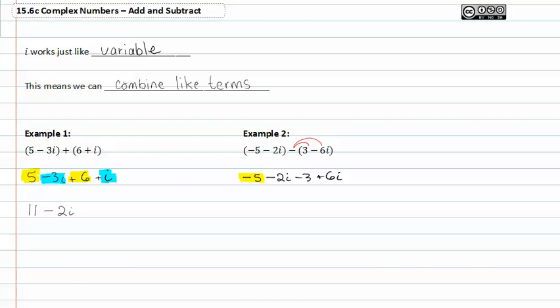-5 and -3 are like terms, while -2i and +6i are also like terms. -5 + -3 is -8, and -2i + 6i is +4i.